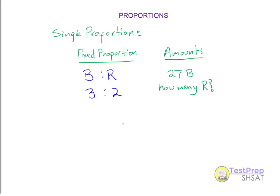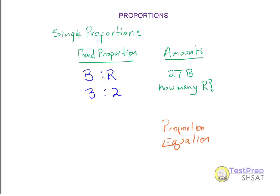So how do we do that? We need to form a proportion equation from the given information. A proportion equation's structure is A divided by B equals C divided by D — this is our typical proportion equation. When given ratios, we take the second ratio and swing it underneath to make it the left side of our proportion equation. So B to R becomes B over R, the number of B over the number of R, and that equals our fixed proportion — swing the second part under the first as the fraction: 3 divided by 2.